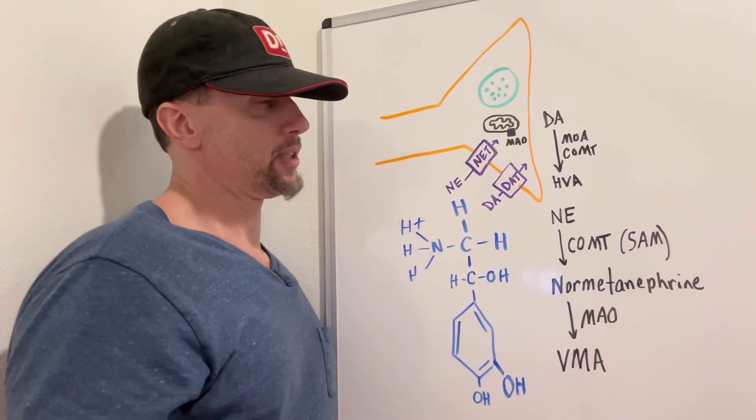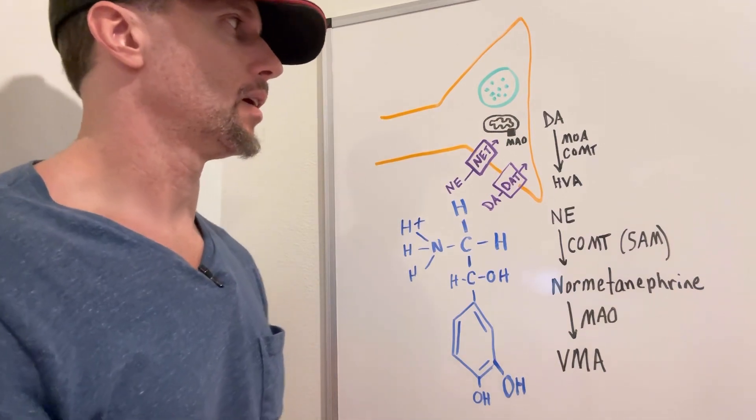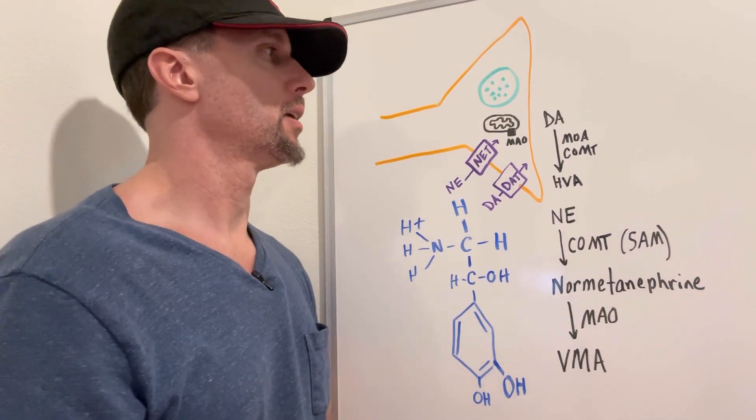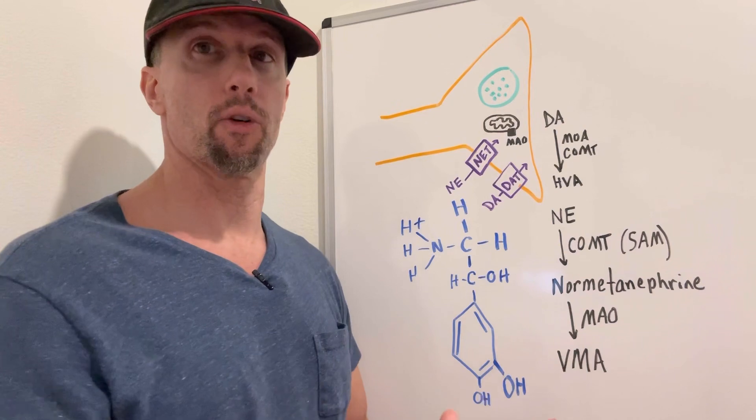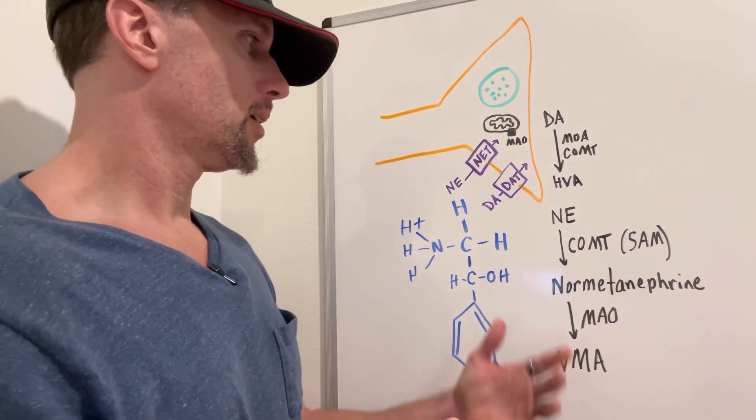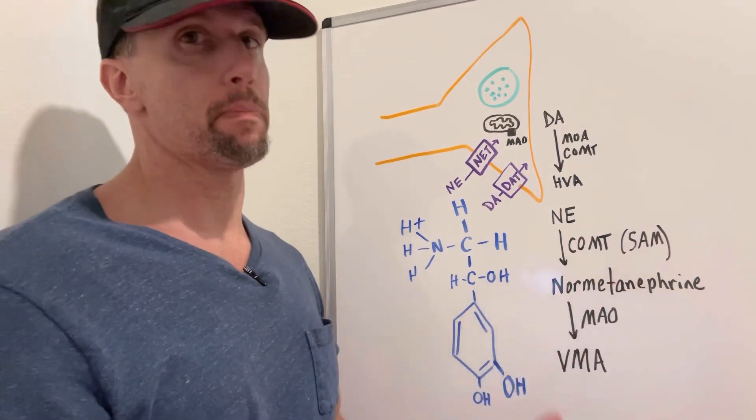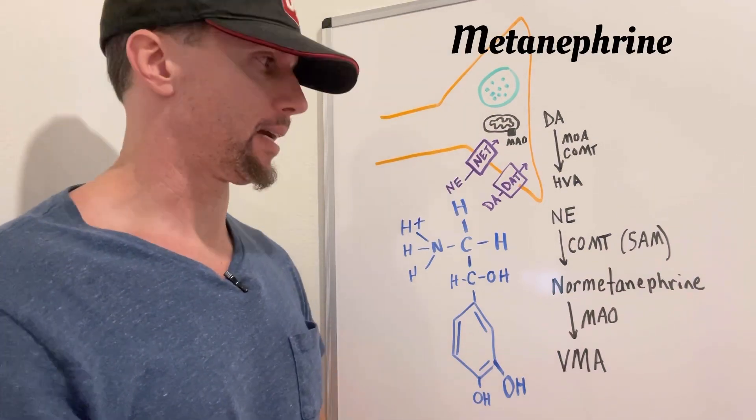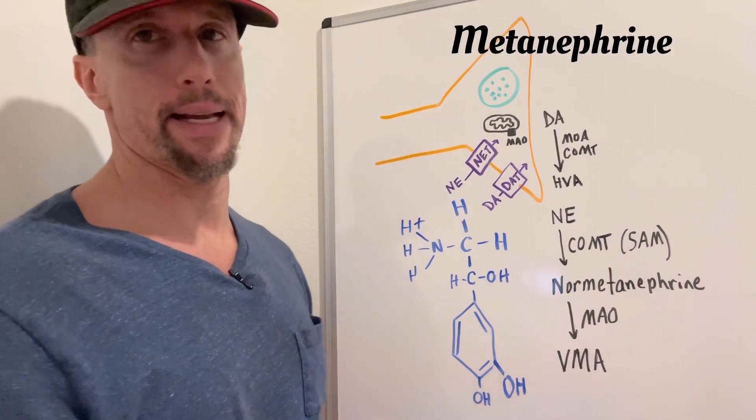So dopamine, it gets acted on by monoamine oxidase as well as catecholamine O-methyltransferase to get to its final product. And then epinephrine has monoamine oxidase and catecholamine O-methyltransferase work on it as well. And instead of being normetanephrine, it's just metanephrine as far as its breakdown, but it ends up being VMA as well.